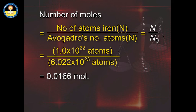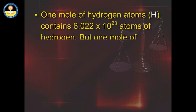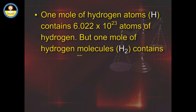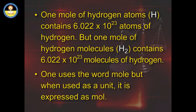When using the term mol, it is essential to specify the kind of particles involved. For example, 1 mole of hydrogen atoms contains 6.022 × 10²³ atoms of hydrogen, but 1 mole of hydrogen molecules contains 6.022 × 10²³ molecules of hydrogen. In text, one uses the word 'mole', but when used as a unit, it is expressed as 'mol'.